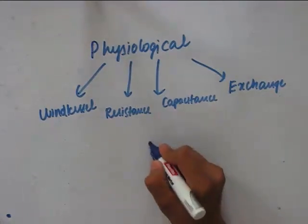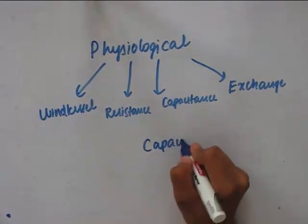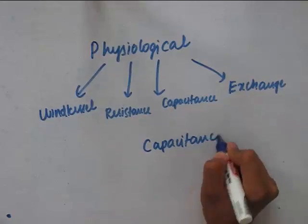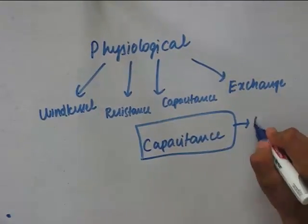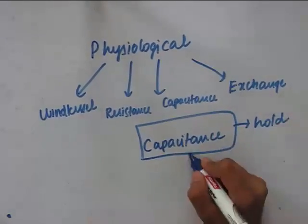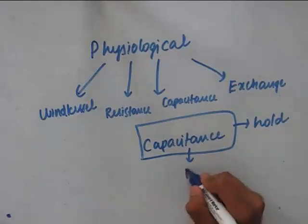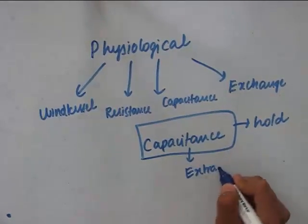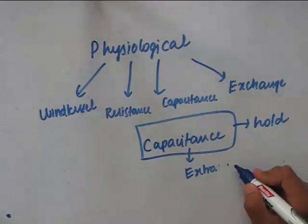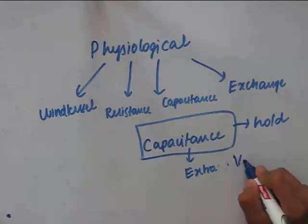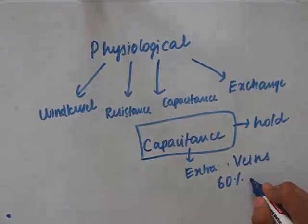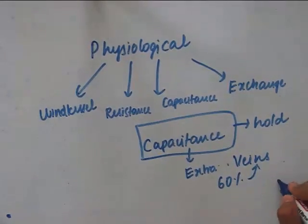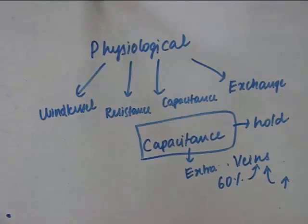Coming to the final category — the capacitance vessels. Capacitance is nothing but the capacity to hold. These are the vessels which can hold an extra amount of blood when necessary, and the vessels in this category are veins. Normally 60% of the total blood is accommodated in veins, but they can accommodate even more. That is the reason these are called capacitance vessels.